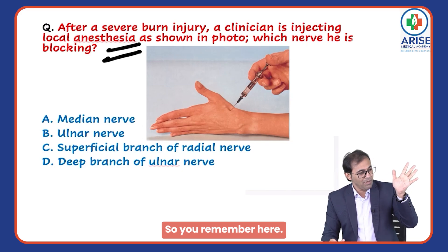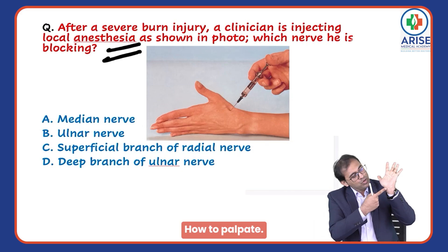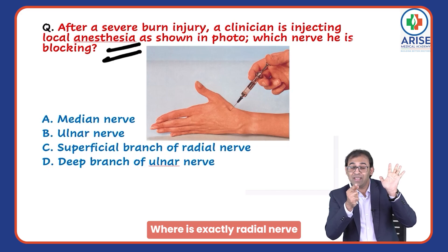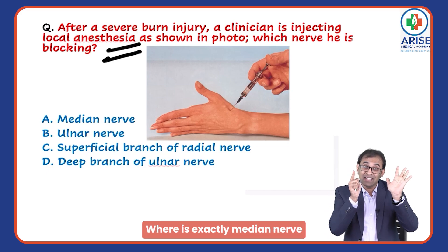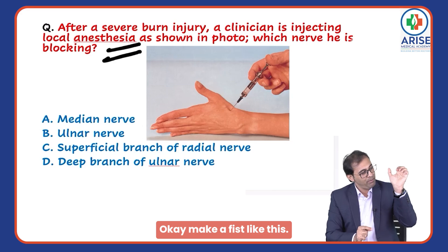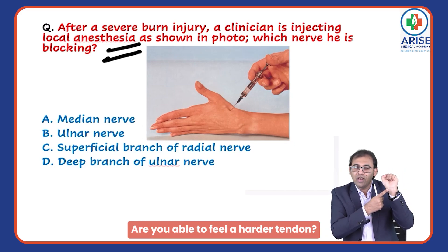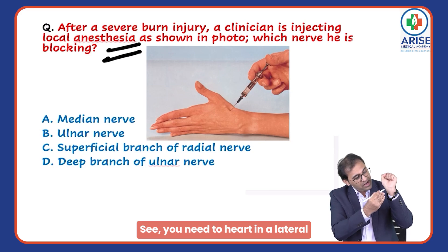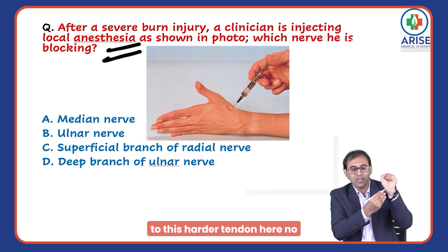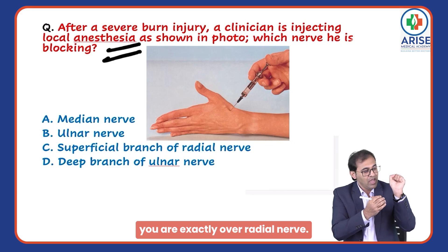See, where do you give the injection? How to palpate — where exactly is the radial nerve, where exactly is the median nerve, where exactly is the ulnar nerve? Make a fist like this. If you touch here, you will feel a harder tendon. Lateral to this harder tendon is where you inject for the radial nerve.